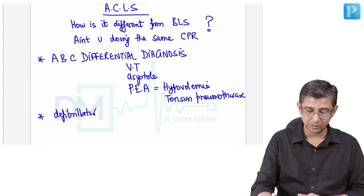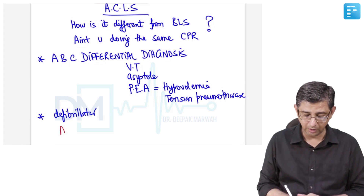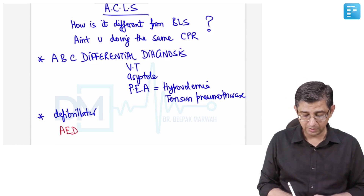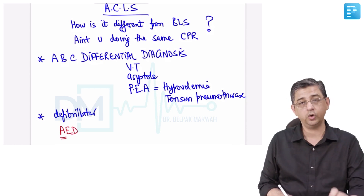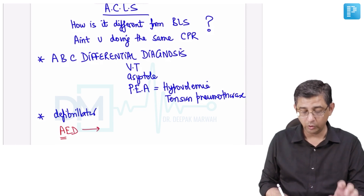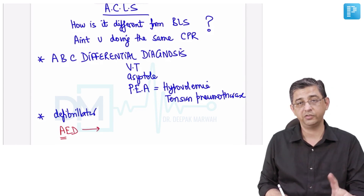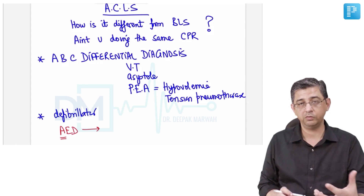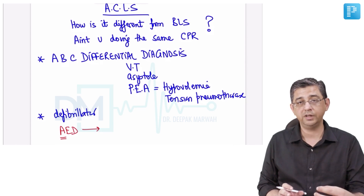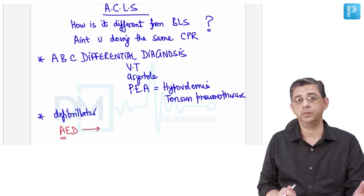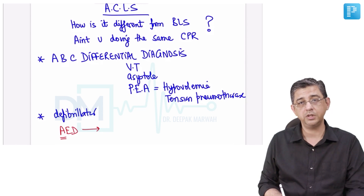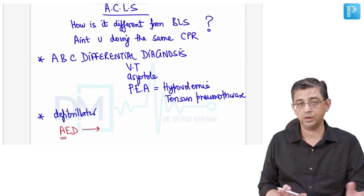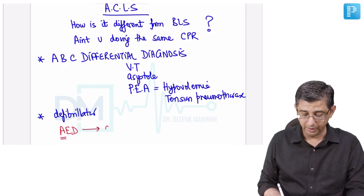Aiding you in that first step is a defibrillator. The usual query from most doctors is: weren't you using an AED — an automated external defibrillator — even in basic life support? The difference is that the AED is automated. When you put it on the chest of the patient, it decides whether the shock is to be given or not. It will say 'shockable rhythm detected' — the decision making is done by the machine. Whereas in ACLS, the defibrillator shows a rhythm and the decision making is done by the doctor.